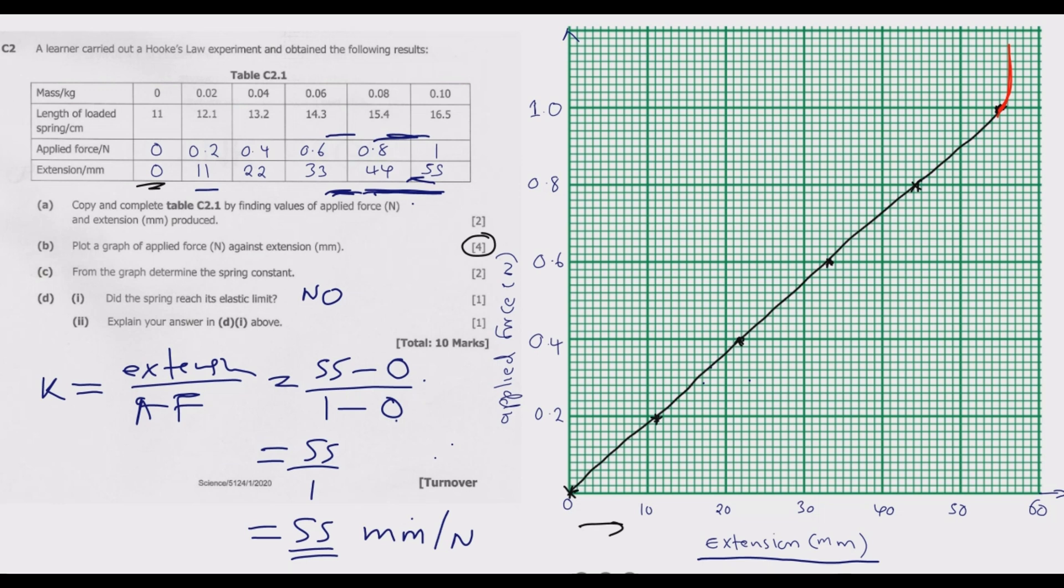We haven't reached the elastic limit. Once you reach the elastic limit, what it means is once you load more, the spring will get damaged such that if you reduce the applied force it will not return to its original position or shape. That's the answer to question D. This is how you get the 10 marks on this question.